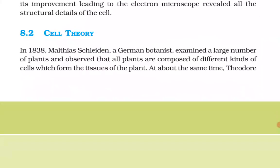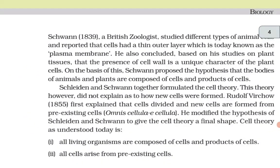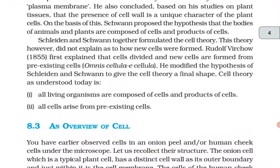Cell Theory: In 1838, Matthias Schleiden, a German botanist, examined a large number of plants and observed that all plants are composed of different kinds of cells which form the tissues of the plant. At about the same time, Theodore Schwann (1839), a British zoologist, studied different types of animal cells and reported that cells had a thin outer layer, today known as the plasma membrane. He also concluded that the presence of the cell wall is the unique character of plant cells.